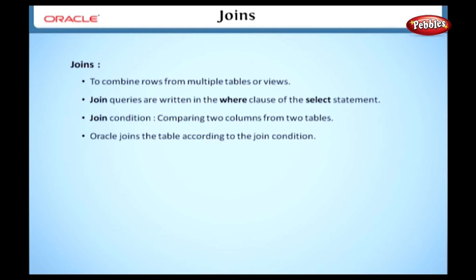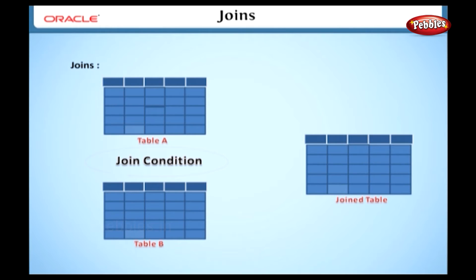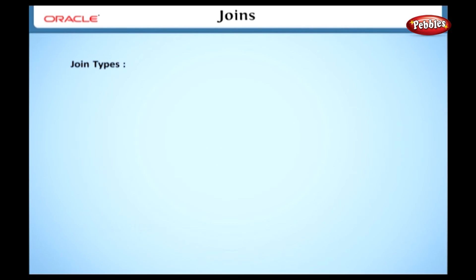If we want to join three or more tables, Oracle evaluates columns of the first two tables and then it joins the result to the other table. Have a look at this image, which shows the operation of a join. Let's see the different types of joins. Joins are classified into different types according to the way the join operation is performed on tables.